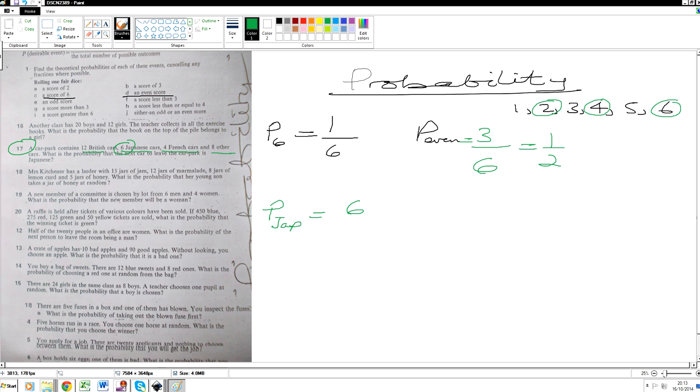What is the total number of cars? What do we do? Add them all up. So that's six and four is ten. Add another twenty, it gives you thirty. So there's thirty cars altogether in the car park. Six of them are Japanese. So six out of thirty can be simplified down to one out of five.